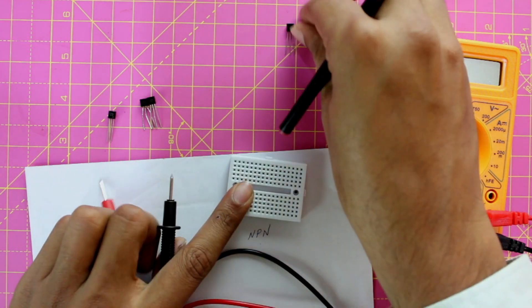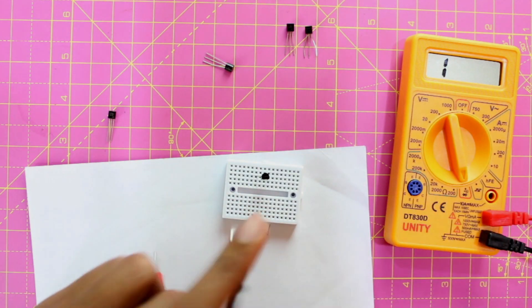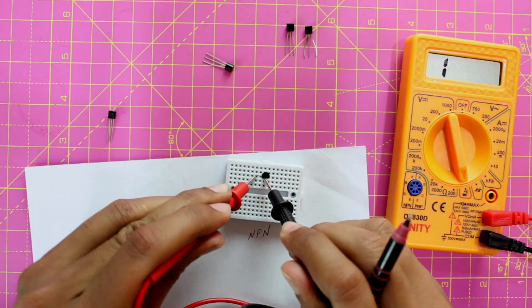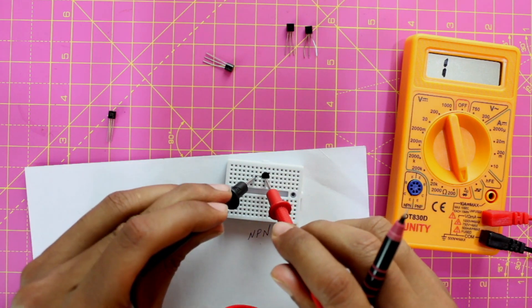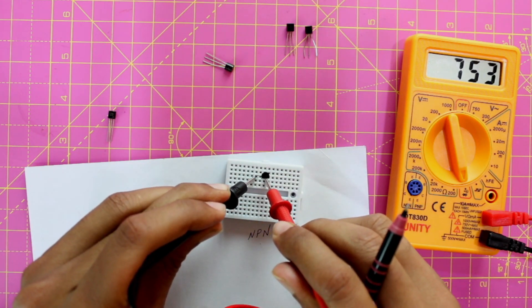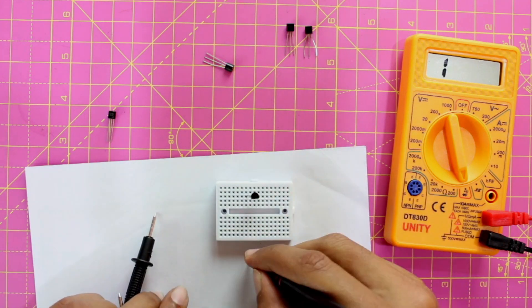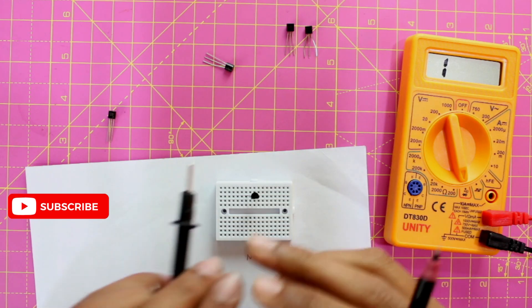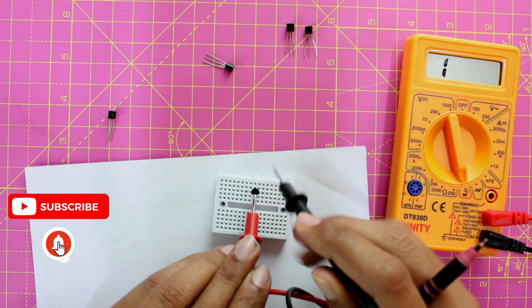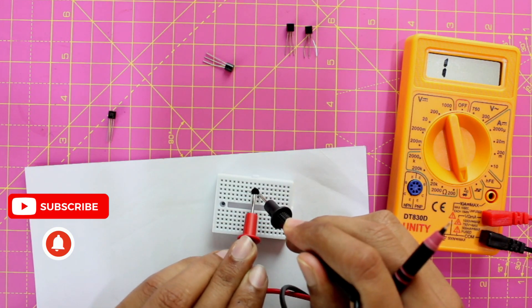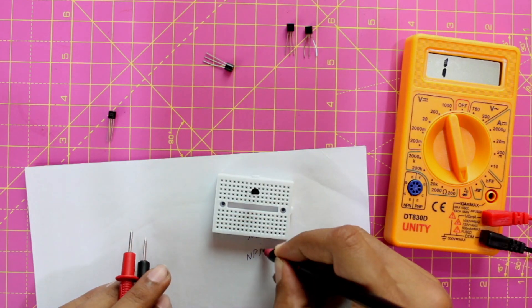Let's repeat it for one more transistor. Again let me start with the first two pins. No voltage drop. I will change my polarity. And now I am getting a voltage drop for the first pin as N and the second pin as P. Let me write it down, N and P. And again I know that my second pin is P, so I will check if my third pin is N. Yes, I am getting a voltage drop. Again this is an NPN transistor.